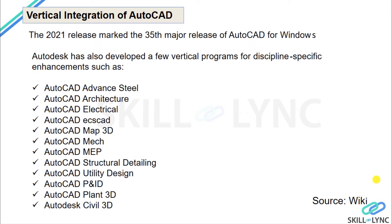As of 2020, AutoCAD follows a yearly release cycle. In 2020, the AutoCAD 2021 product was introduced, which marks the 35th major release of AutoCAD for Windows. AutoCAD is also available for the Mac operating system.